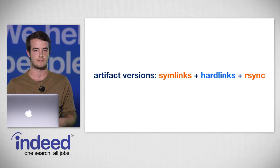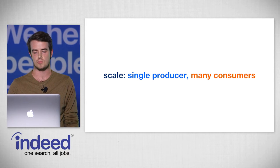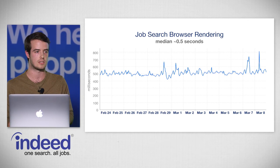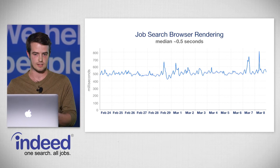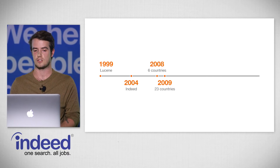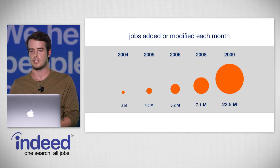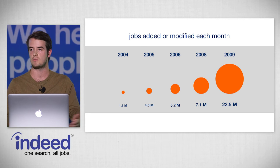With the produce-once, consume-many concept, we could scale where we needed it most — on our search engine servers — keeping the site fast. Today it's around half a second for the page to load. By 2008, we had expanded job search into six different countries. In 2009, we made a significant effort to expand into 23 different countries. And by 2009, the number of jobs we were adding or modifying each month grew to 22.5 million, up from 1.8 million in the early days.